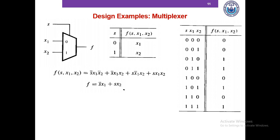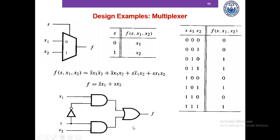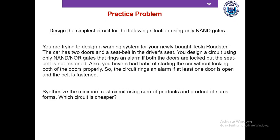Hopefully you've been able to design the circuit. This is the implementation of a 2-to-1 multiplexer using NOT, AND, and OR gates. Here is another design problem — please pause this video and try to solve it.